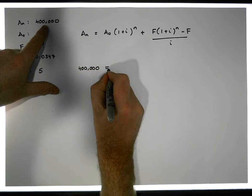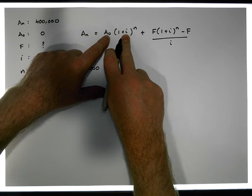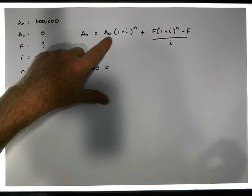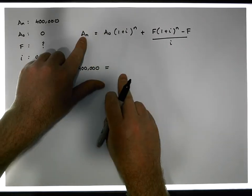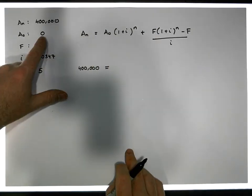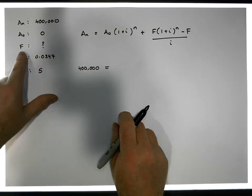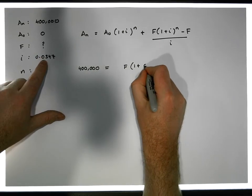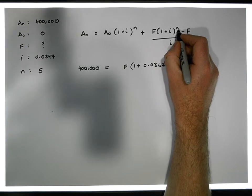Since a₀ is zero, the term A₀ times anything naturally falls away. This is important for a sinking fund: when there is no initial investment at time zero, the formula reduces to Aₙ equal to the remaining term alone. So we have 400,000 euros equal to f times [(1+i)ⁿ − 1] / i. We know i = 0.0347 and we need to determine n.